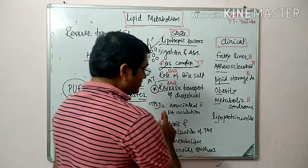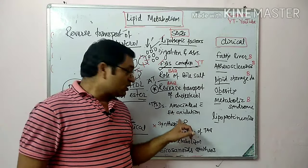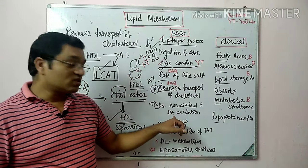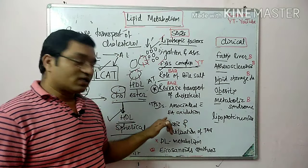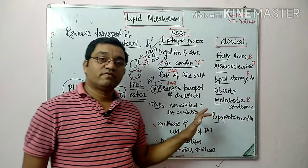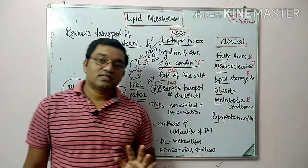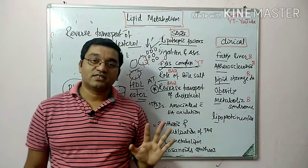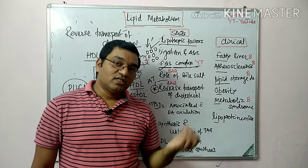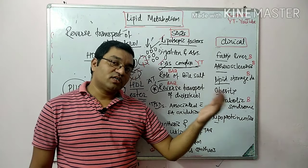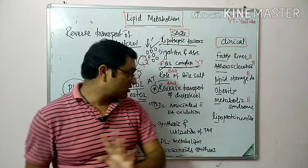Disorders associated with fatty acid oxidation include SIDS, Jamaican vomiting sickness, Refsum's disease, Zellweger syndrome, and methylmalonic aciduria. Oxidation of odd-chain fatty acids occurs in the same way as even-chain fatty acids, but the end product is propionyl coenzyme A.